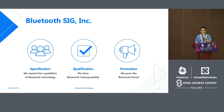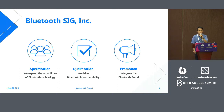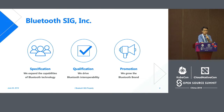We have three basic tasks. The first task is specification. We now have over 15 task groups. Our membership companies can join different SIG work groups and task groups to make contributions to the standards.